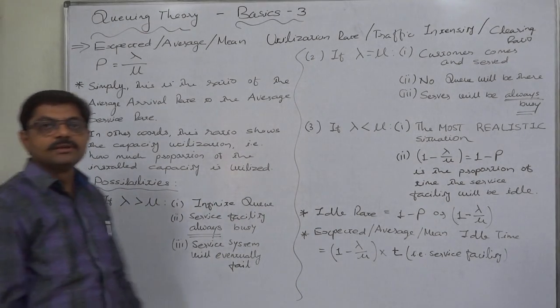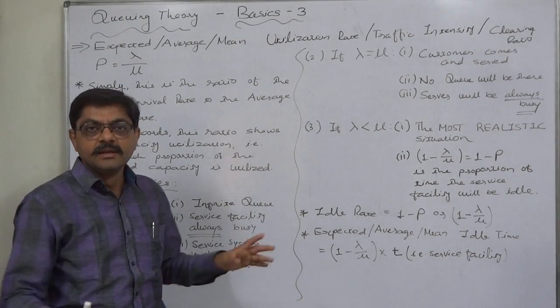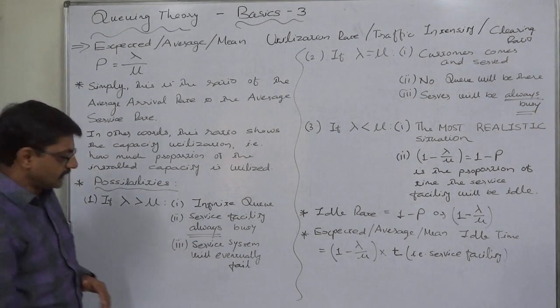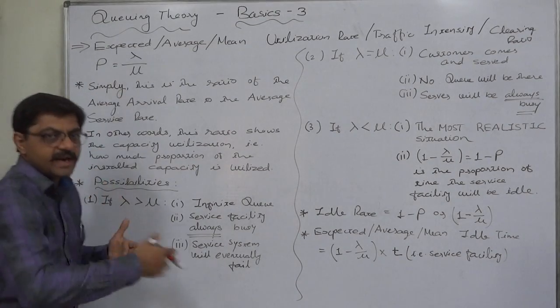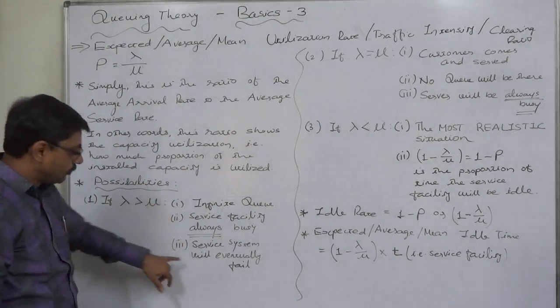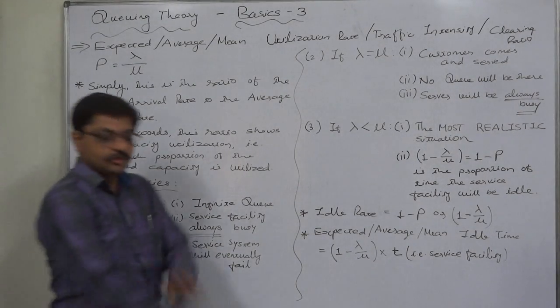Service facility remains always busy. In our example the cashier is always busy serving the customer in front of him, and there are so many customers behind that particular customer who is presently being served. Ultimately the service system will eventually fail.